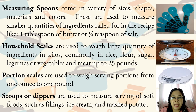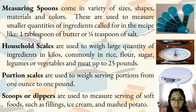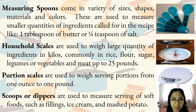Measuring spoons come in a variety of sizes, shapes, materials, and colors. These are used to measure smaller quantities of ingredients called for in a recipe, like one tablespoon of butter or one-fourth teaspoon of salt. Measuring spoons are only used when you need to measure ingredients, either cold or hot, that should be in small quantity and cannot be measured by using measuring cups.